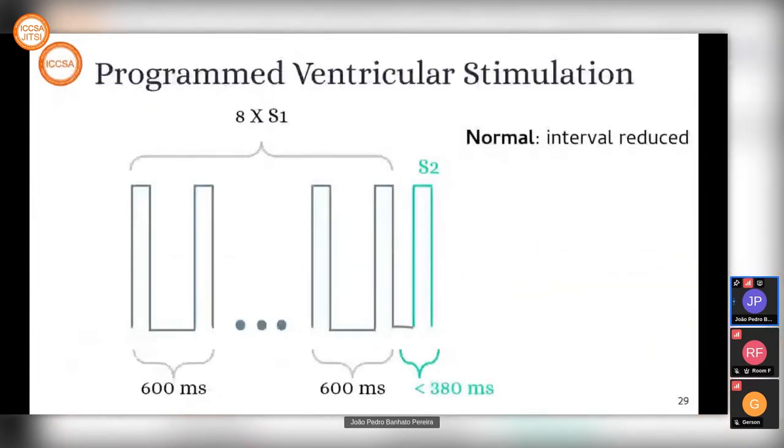Our protocol says that if we have a normal stimulus, we get the interval reduced because our main goal is to stress the tissue. The closer we get to the effective refractory period, the bigger the chances to induce an arrhythmia.